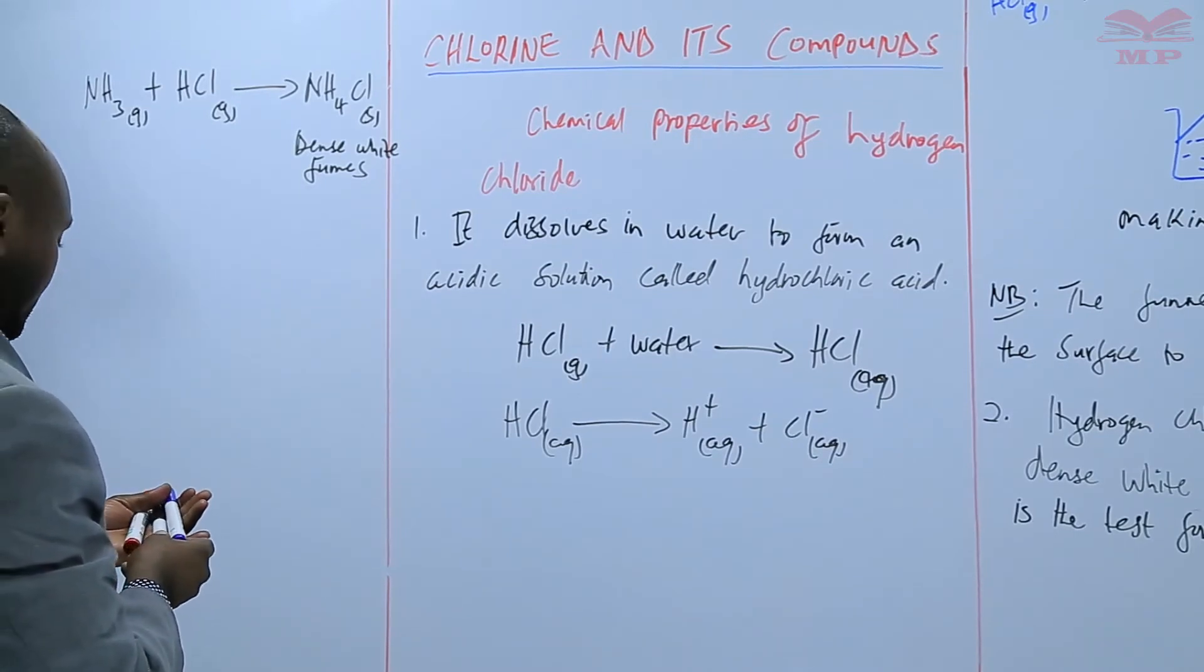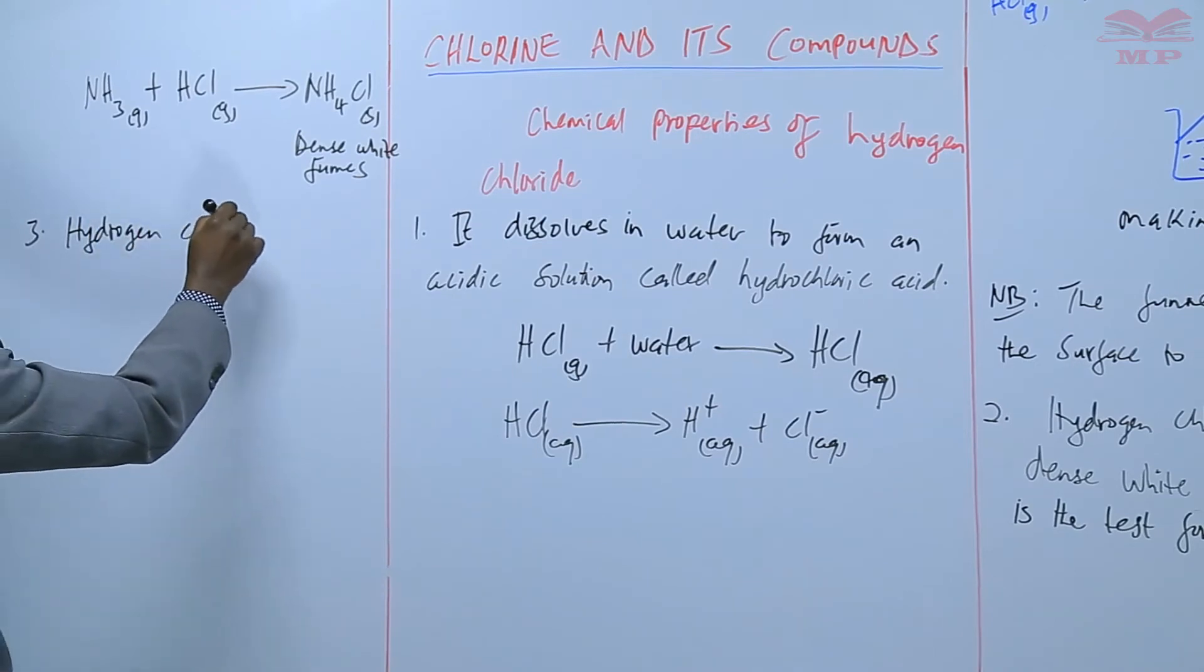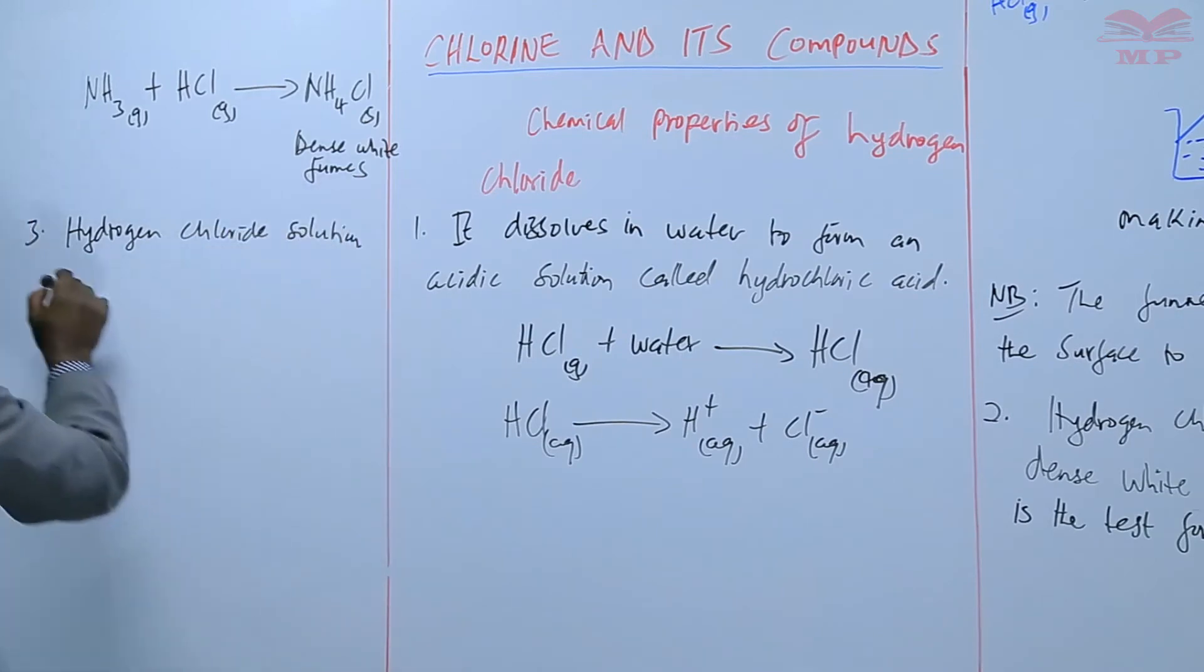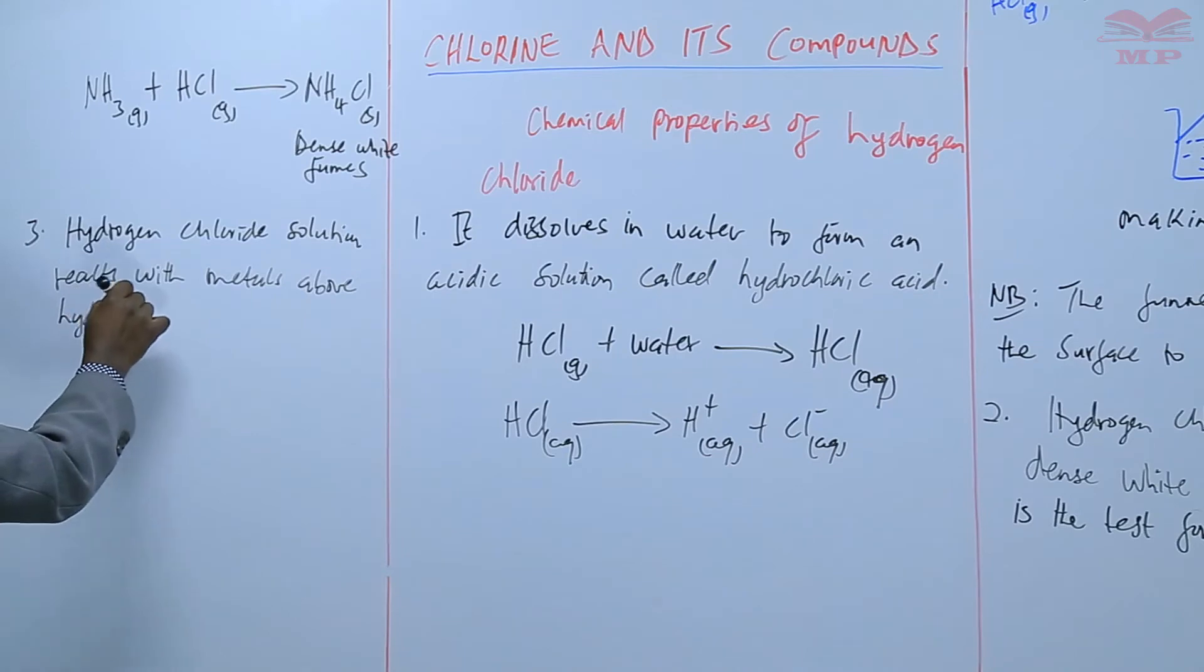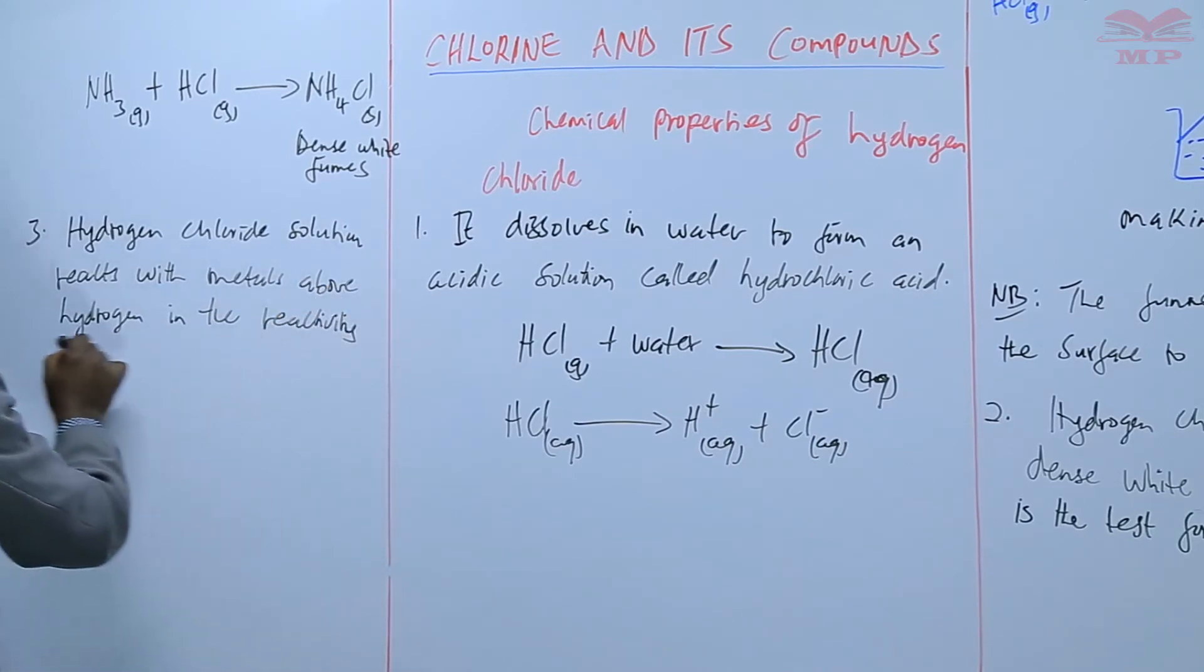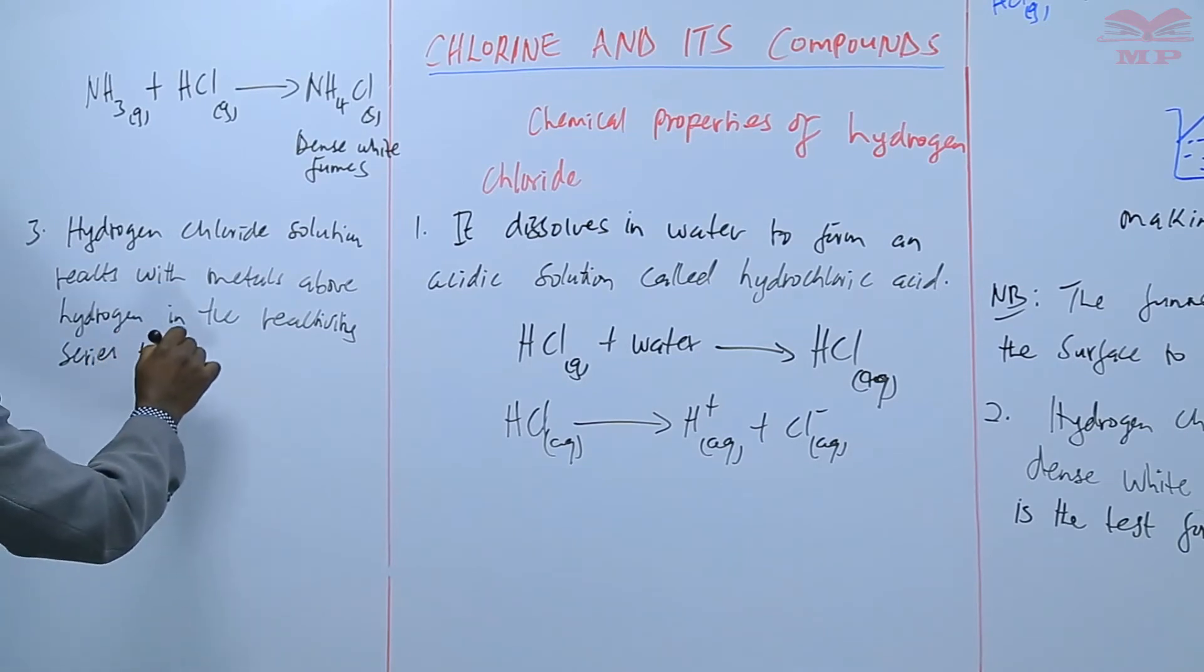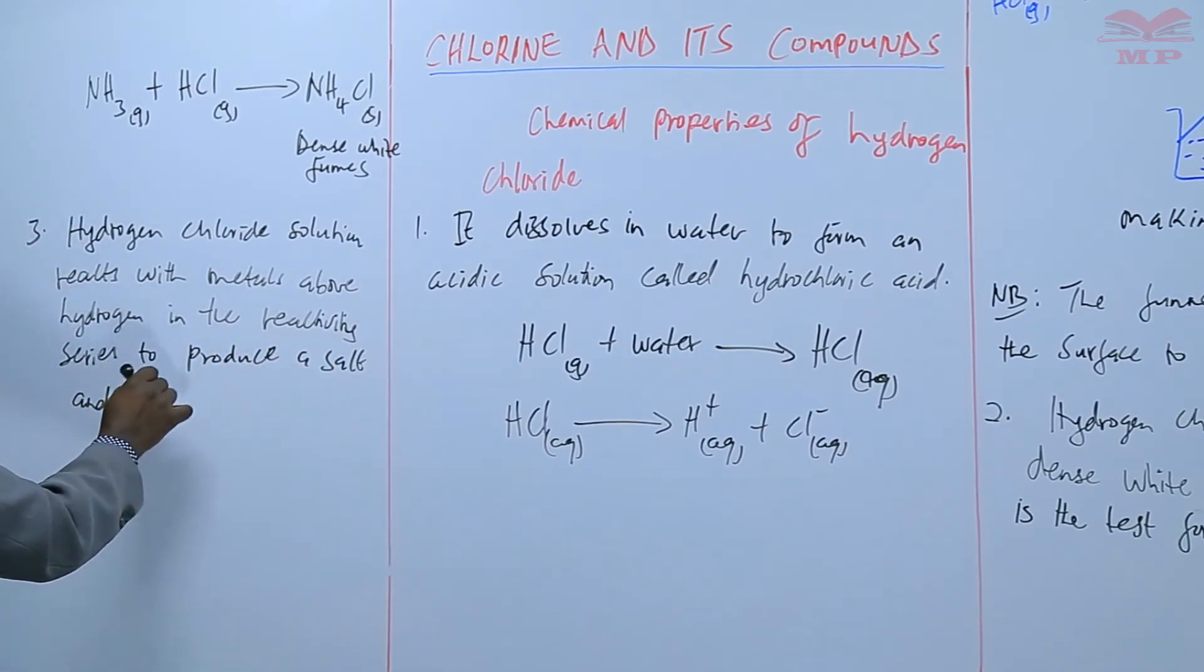The other property of hydrogen chloride is that hydrogen chloride solution reacts with metals, reacts with metals above hydrogen in the reactivity series, those metals above hydrogen in the reactivity series, to produce a salt and hydrogen gas.